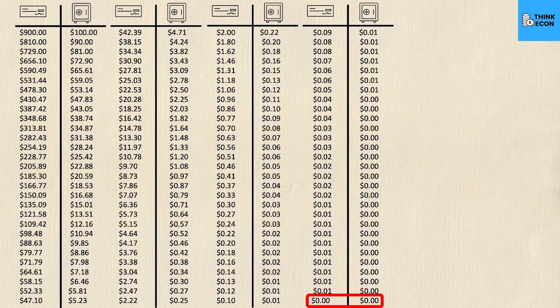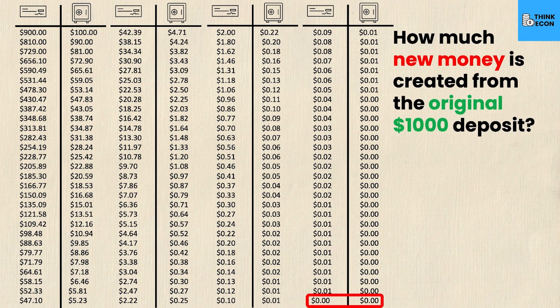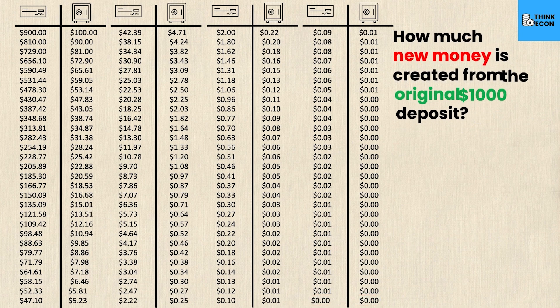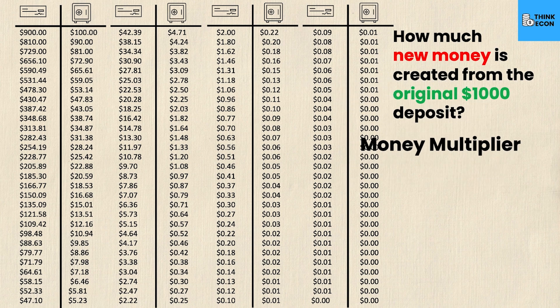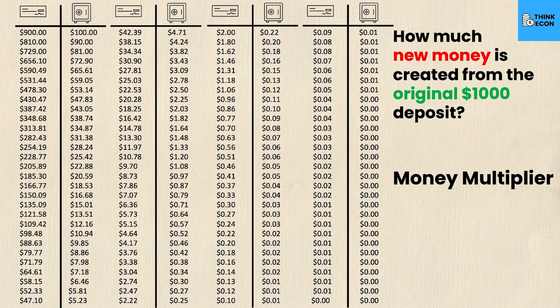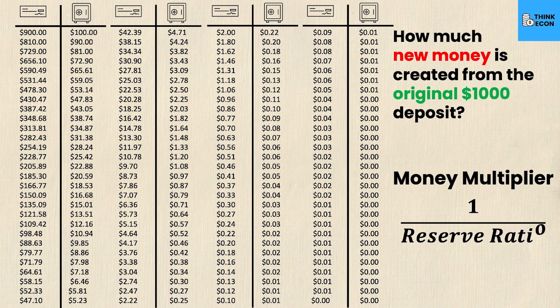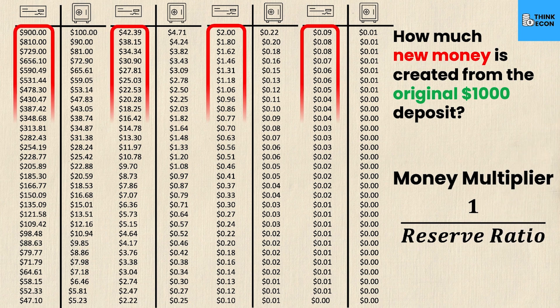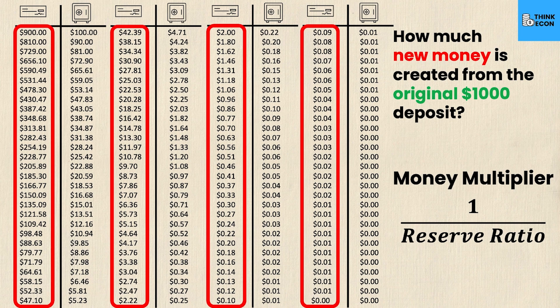That leads to the question: how much money is created from the original $1,000 deposit? This introduces a term called the money multiplier. The money multiplier follows a simple calculation — it's just one over the reserve ratio — and we use it to sum all the new money created, instead of adding up each iteration individually. We multiply it by the first loanable funds amount from the original deposit.